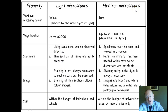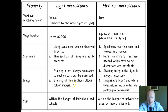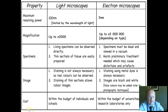Comparing light and electron microscopes is a popular exam question. Key differences include resolving power and magnification. With a light microscope, you can sometimes look at living specimens; with an electron microscope, the specimen must be dead. Light microscopes don't always require staining, whereas electron microscopes always produce black-and-white images, though false colour can be added later. Light microscopes are affordable for schools; electron microscopes are found in universities and research laboratories.